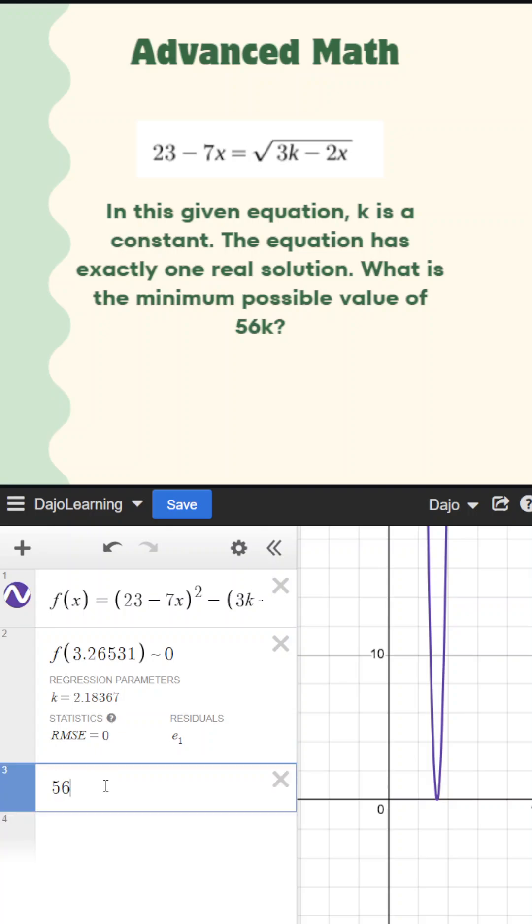And then we could simply do 56 times k. And then boom, we have our answer 122.2857 and so on. You can round yourself.